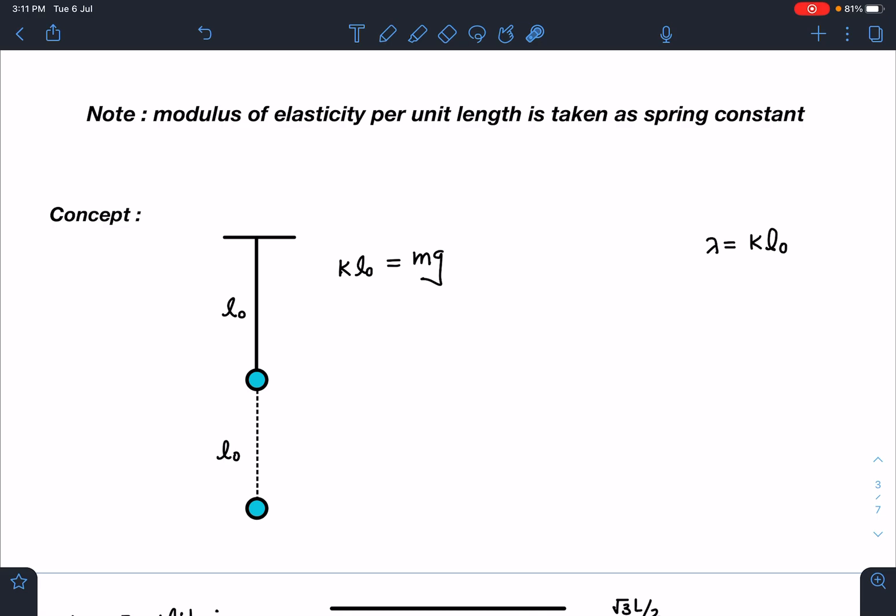So YA/L is your k. This kind of confusion may come but proportionality-wise it will be the same, so I am taking its spring constant as k. Since they are telling any length you take and you suspend a particle, it will give extension of same length L₀. Such kind of string is present, so kL₀ = mg, or the λ = kL₀ here, where λ is modulus of elasticity.